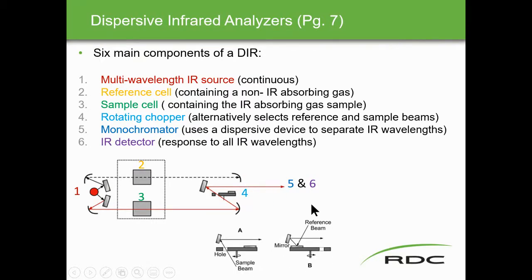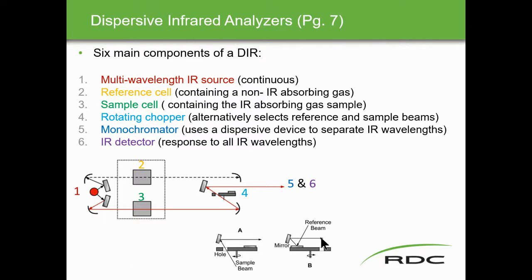The chopper, because it rotates, alternates between the sample cell and the reference cell. The sample beam goes through at one position, and as it spins to the other position, the reference beam is directed via a mirror. The analyzer receives alternating reference and sample signals — reference, sample, reference, sample — which prevents drift.